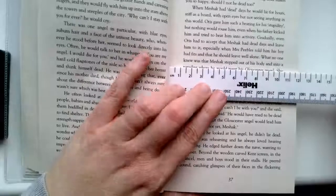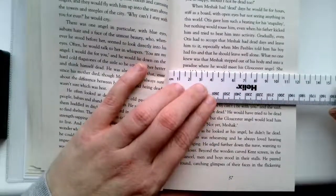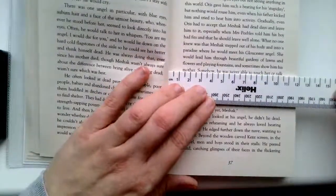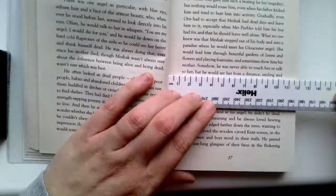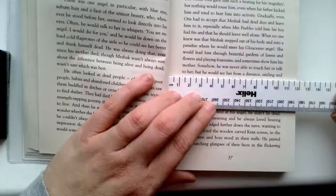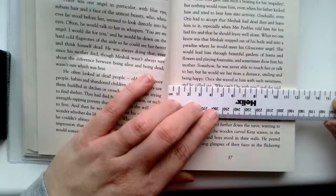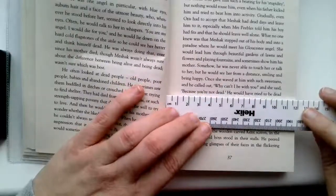What no one knew was that Meshach stepped out of his body and into a paradise where he would meet his Gloucester angel. She would lead him through beautiful gardens of lawns and flowers and playing fountains and sometimes show him his mother. Somehow he was never able to touch or talk to her, but he would see her from a distance, smiling and being happy. Once she waved at him with such sweetness, and he called out, Why can't I be with you? And she said, Because you are not dead.